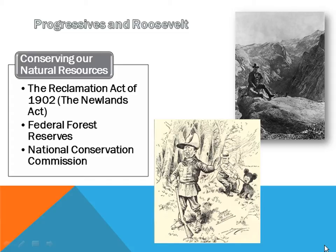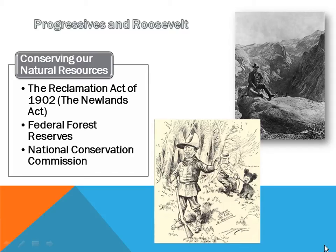Have you ever driven through the Dayton Crockett Forest on I-10, or the Lyndon B. Johnson grasslands off I-35? These are federal reserve areas set aside that will not be leased to private entities, preserved to maintain natural resources. To administer the federal forest reserves, Roosevelt created the National Conservation Commission. Roosevelt was such a hunter that he also understood: if you kill everything, there's nothing left for future generations.